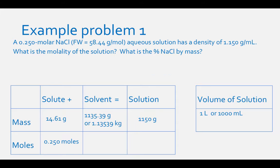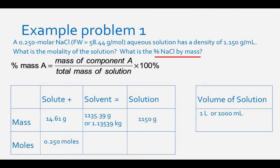The next question is: what is the percent NaCl by mass? Percent mass equals mass of NaCl divided by total mass of solution times 100%. Using the values in the table: 14.61 g ÷ 1,150 g × 100% = 1.27%.